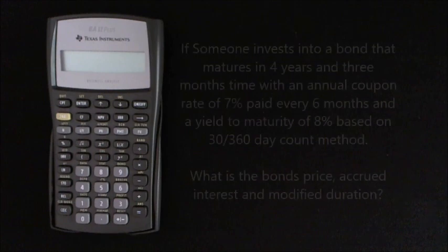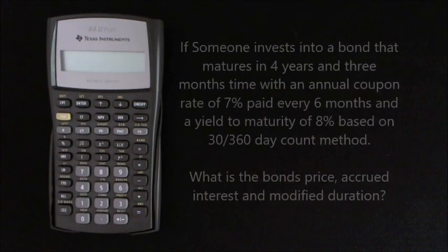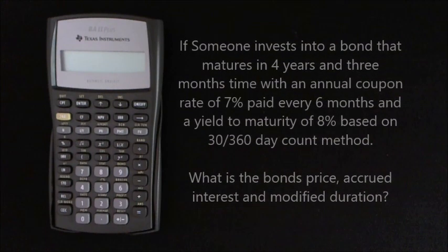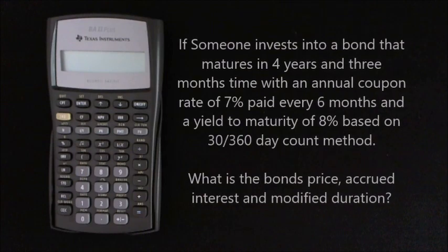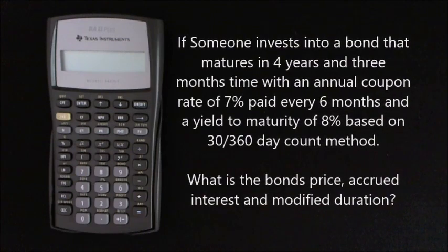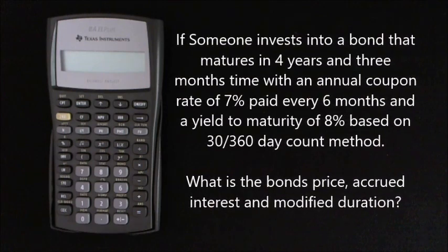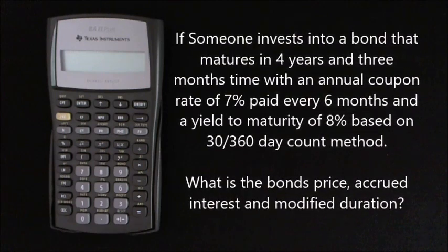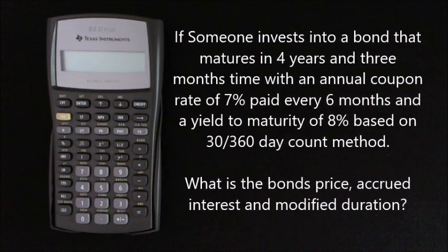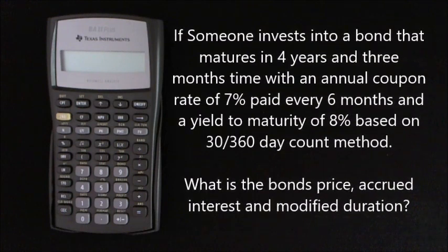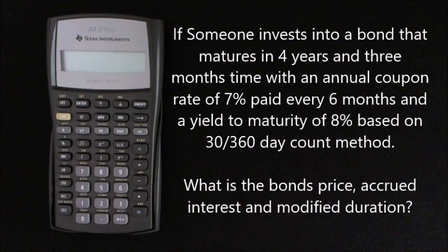If somebody invests into a bond that matures in four years and three months time, with an annual coupon rate of 7% paid every six months, and a yield to maturity of 8% based on a 30/360 day count method, what is the bond's price, what is the accrued interest, and what is the modified duration.